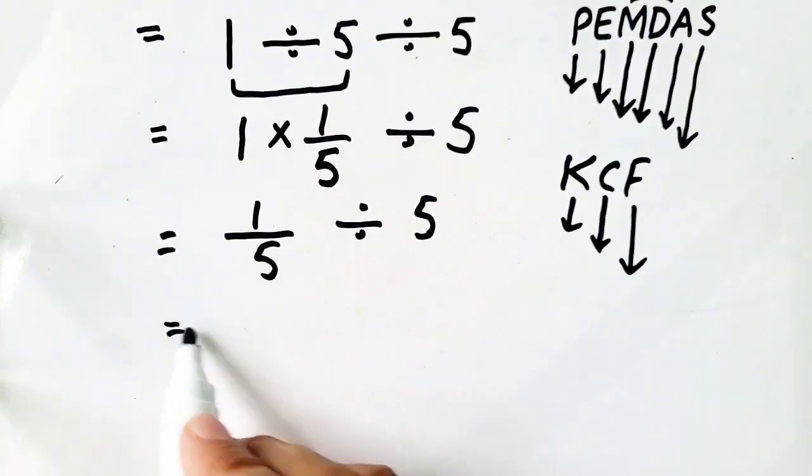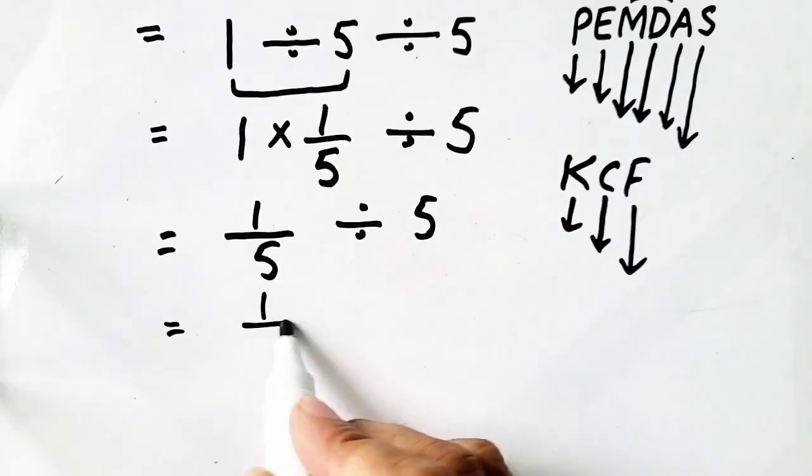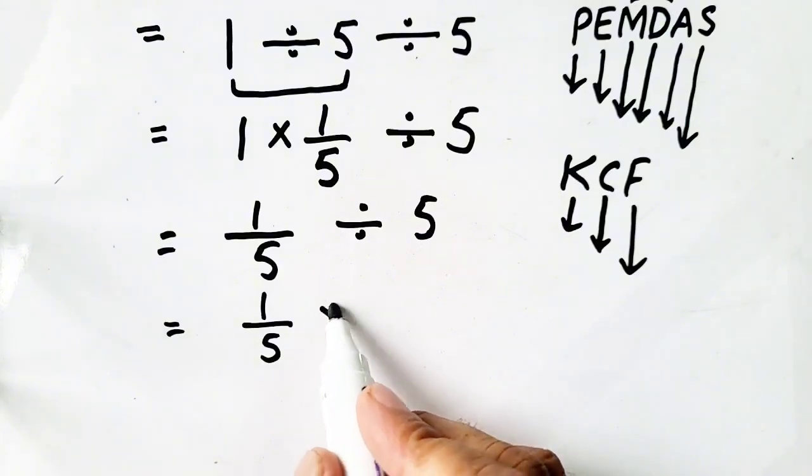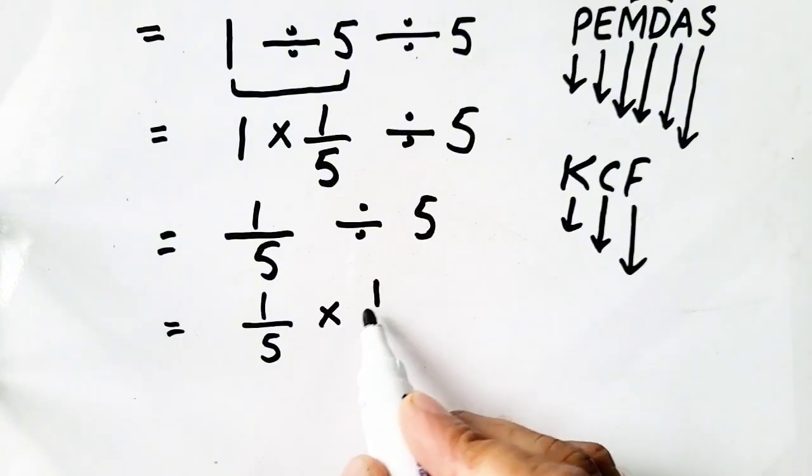So, again, we apply flip rule. 1 over 5 is converted into multiplication, and 5, flip it, will be 1 over 5.